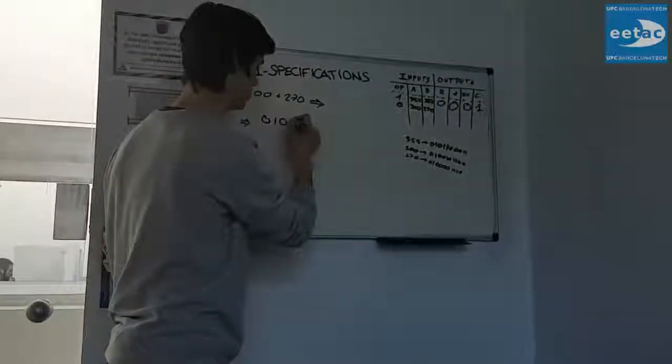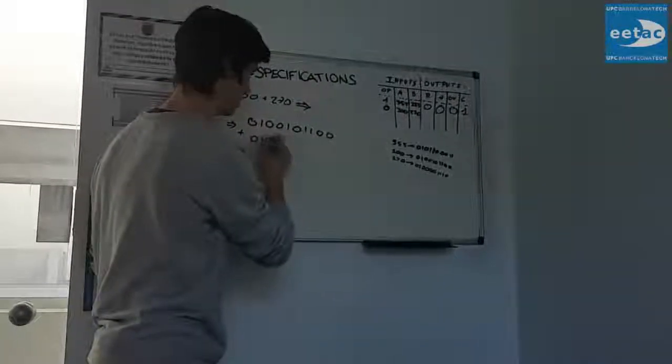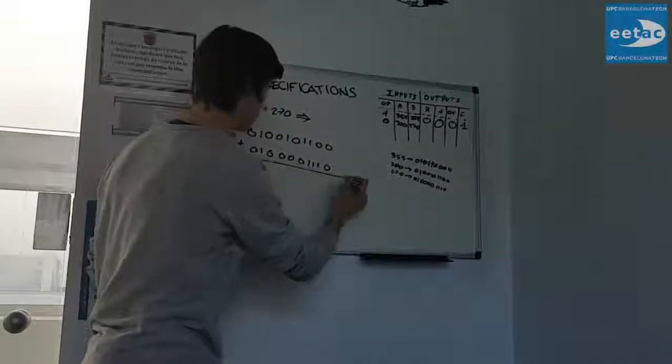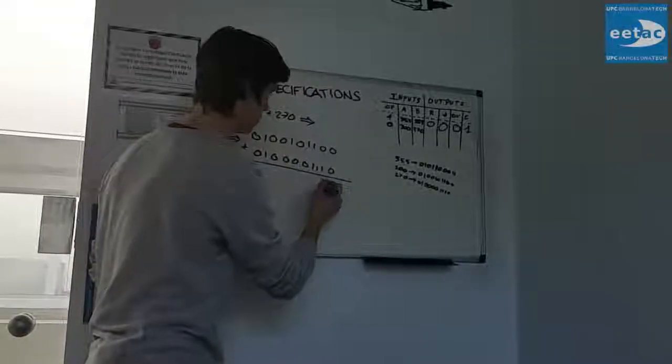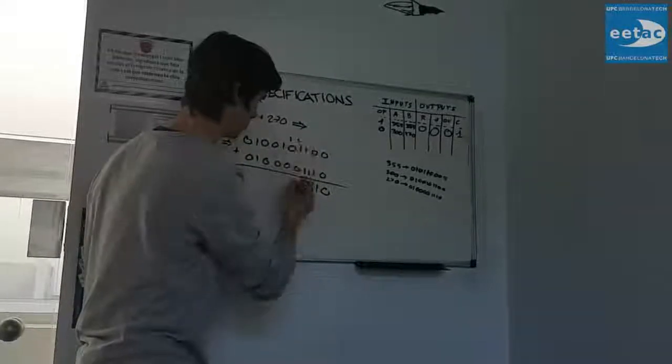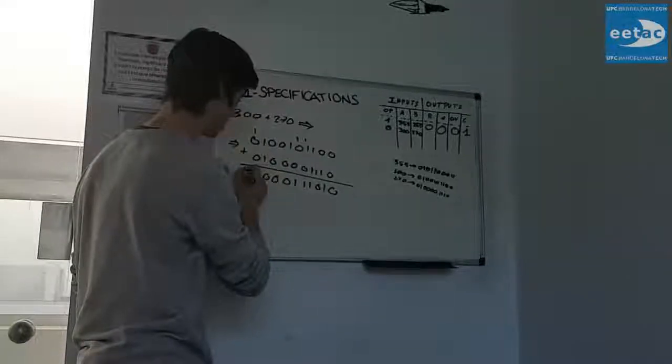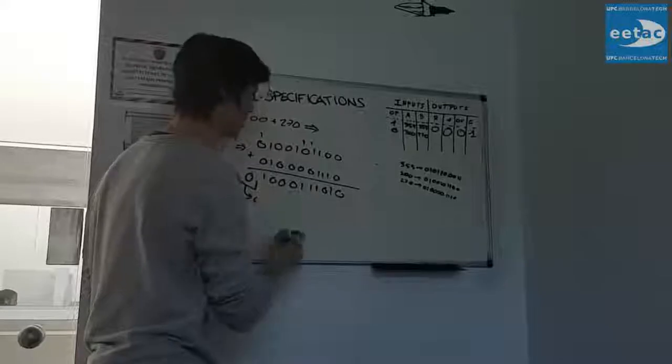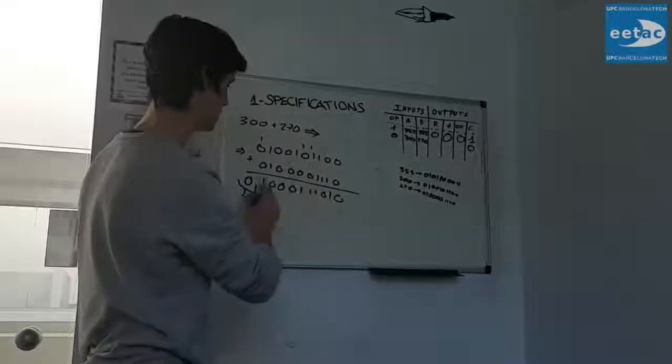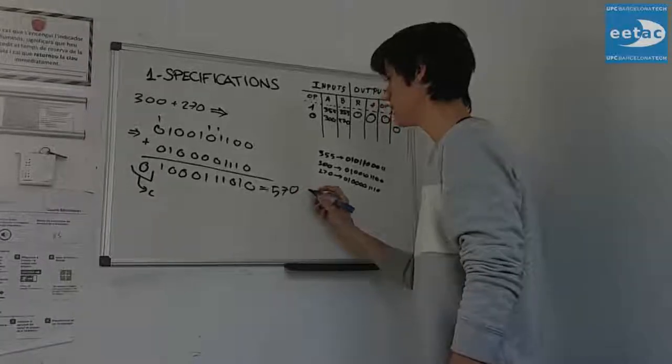0100101100 plus 0100001110 equals 1000111010, and carry out is 0 in this example.